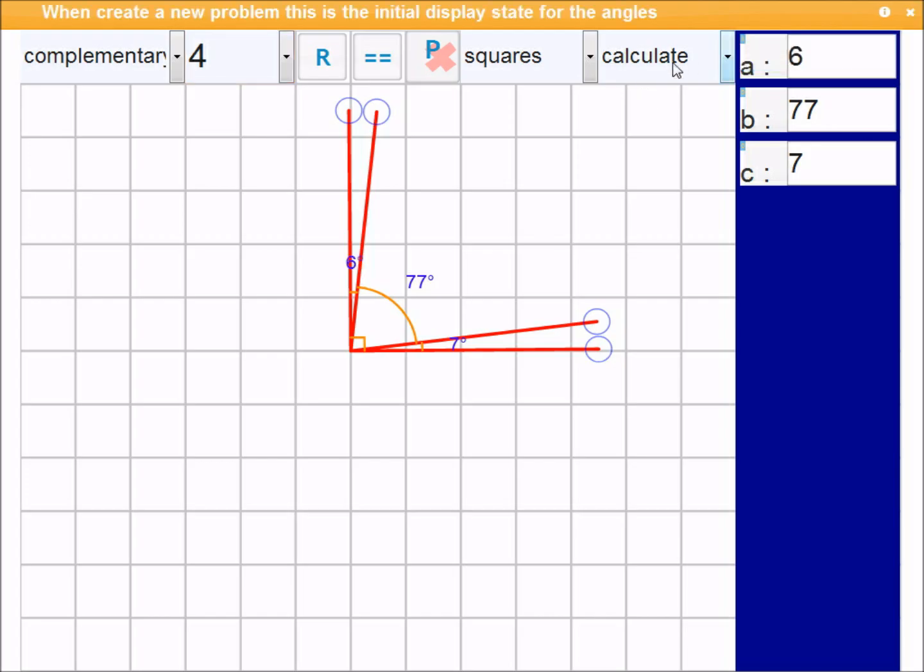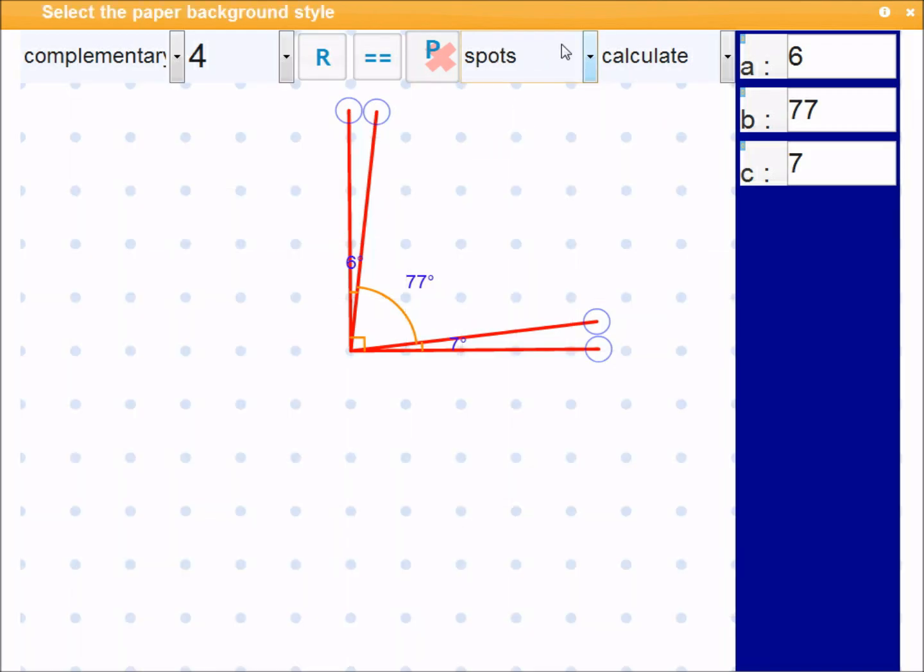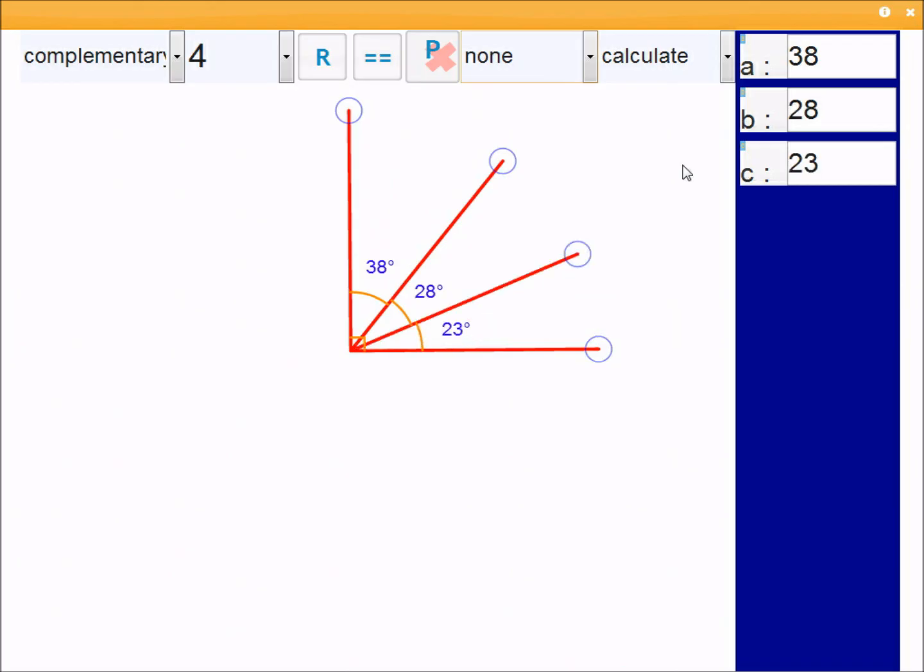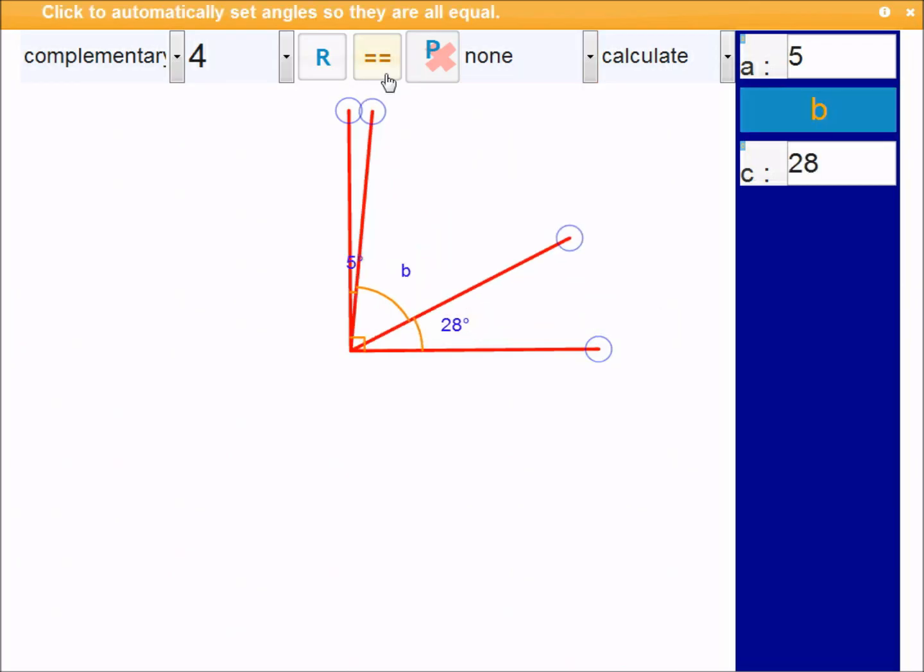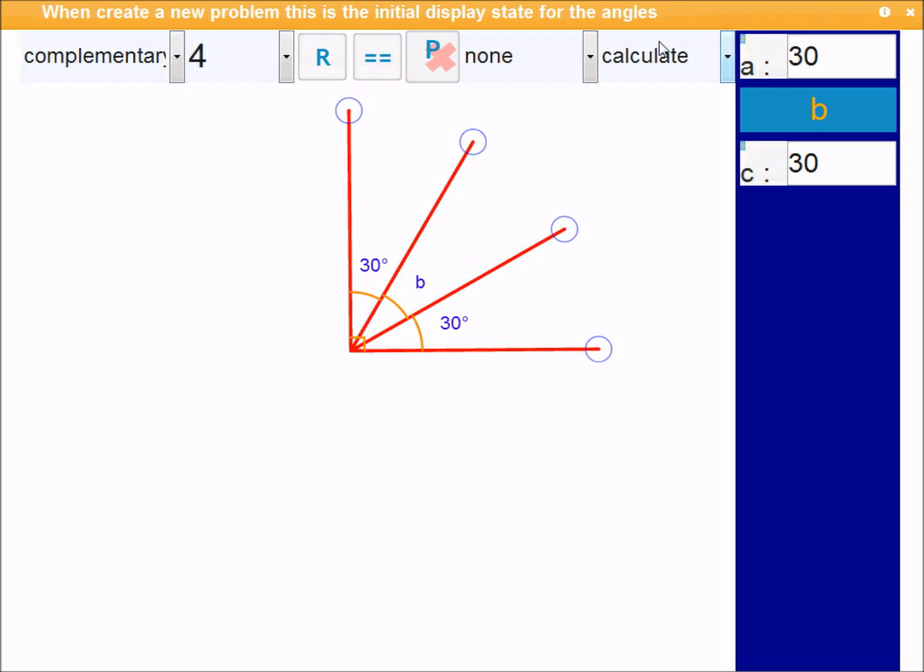Also, you can hide the squares and create spots instead, or you can have none. One other control I haven't mentioned is this one here. When I click this, it makes all the angles equal. In this case, because we're talking about three angles and a complementary, that's going to be 90 divided by 3, giving you 30 degrees each.